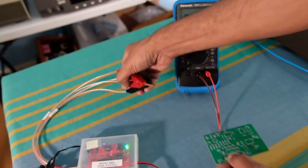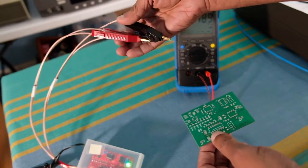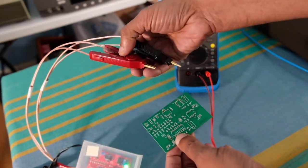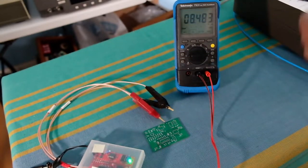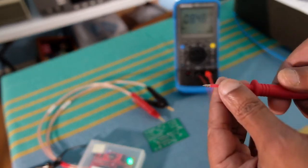So I don't have the right probe actually for doing tracing of shorts because this is not a very sharp point. Ideally you would need something like this which has a sharp tip.